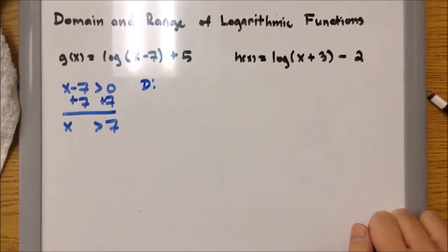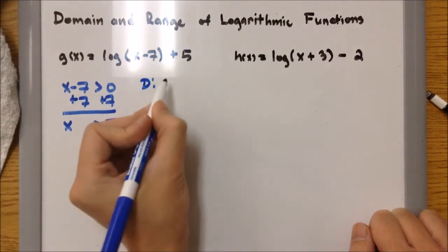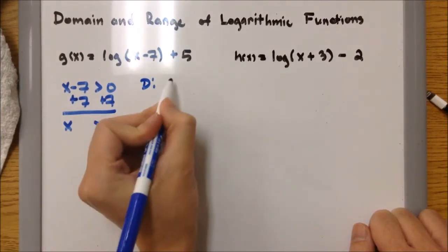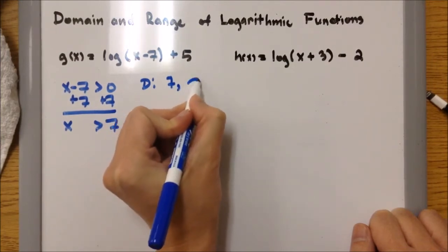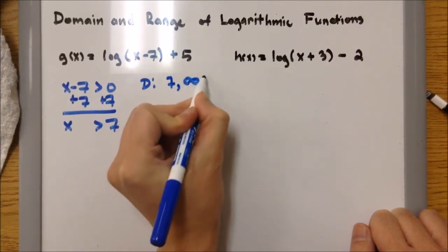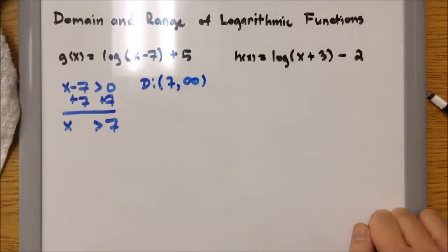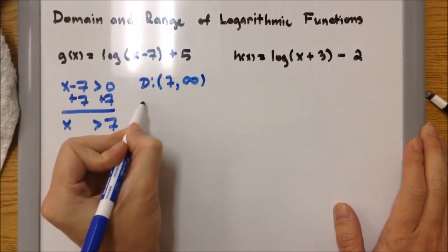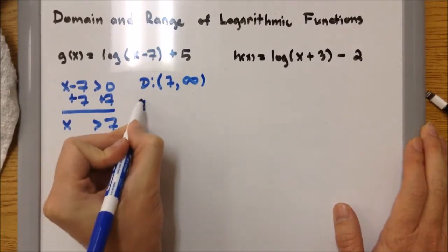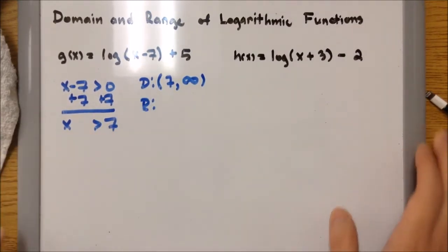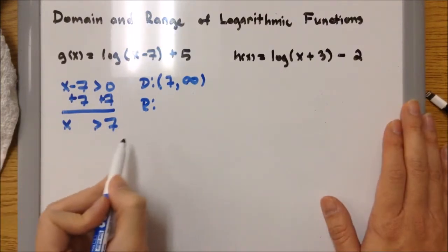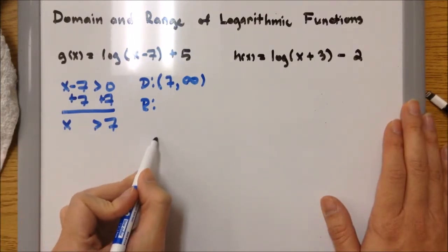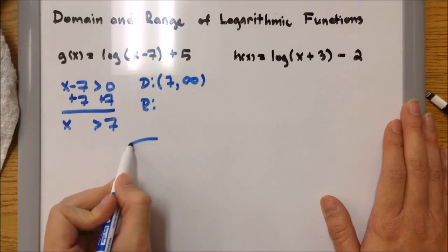X can be any number more than 7, so if it's more than 7, it's going to start on the left and go to positive infinity. Our range — if we were to talk about the graph — usually the log function looks like this.